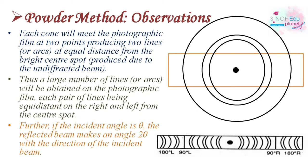If the incident angle is theta, then the reflected beam makes an angle of 2-theta with the direction of the incident beam. So the reflected beam direction relative to the incident beam is 2-theta — this is important to remember.